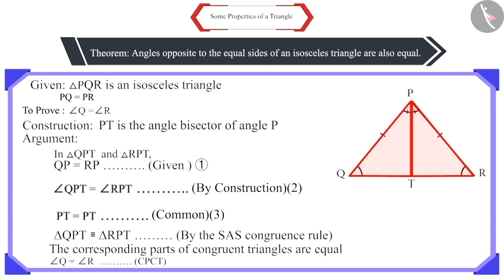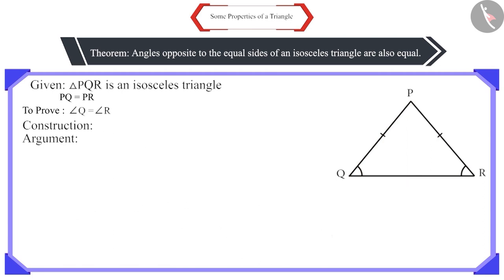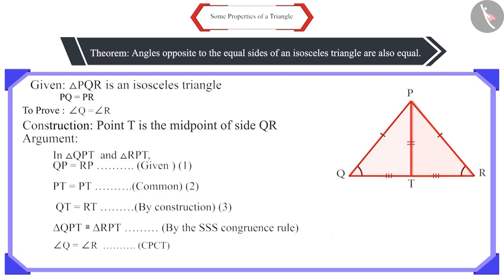Friends, we can prove these two triangles congruent by some other methods also. For example, if we take the midpoint of side QR as T and draw a line PT. Now, we can see that in both triangles, all three sides are equal. Therefore, according to the SSS congruence rule, these two triangles will be congruent. And the corresponding parts of congruent triangles are equal. Therefore, angle Q and angle R will also be equal.